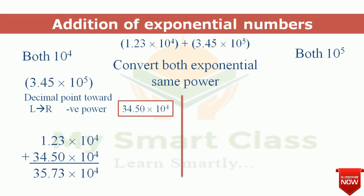35.73 × 10⁴ is not in scientific notation because 35 is greater than 9.99. We shift the decimal point one place to the left, increasing the power by one. Our final answer becomes 3.573 × 10⁵.